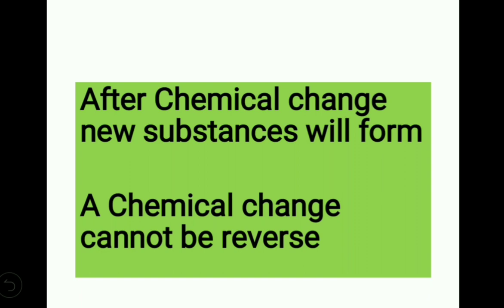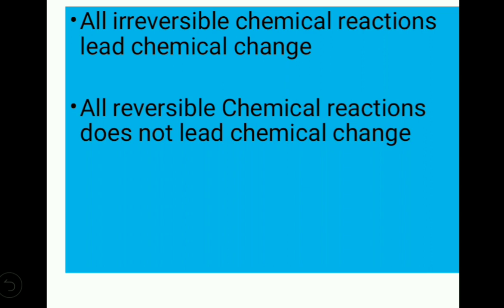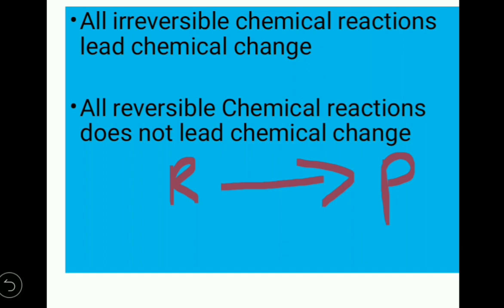Now, I am going to classify chemical reactions into two categories: reversible and irreversible chemical reactions. All irreversible chemical reactions lead to chemical change. In an irreversible reaction, reactants are converted into products, so a new substance is forming — the first condition of chemical change is satisfied. And since the process cannot be reversed, the second condition is also satisfied. So all irreversible chemical reactions lead to chemical change.